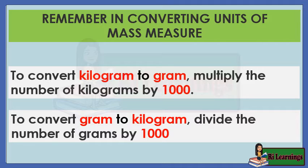Remember, in converting units of mass measure: to convert kilograms to grams, multiply the number of kilograms by 1,000. To convert grams to kilograms, divide the number of grams by 1,000.